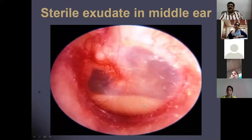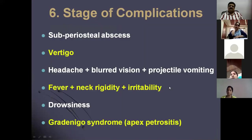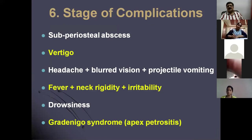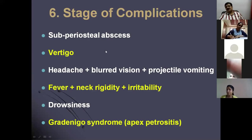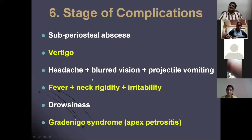A fluid collection again behind the intact area, in the stage of complications. The complications can be in the form of vertigo, headache, blurred vision because of impending meningitis, and projectile vomiting along with neck rigidity and irritability. This will be dealt during your stages of complications of CSOM. The presentation is different.